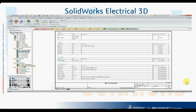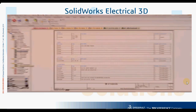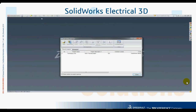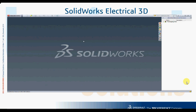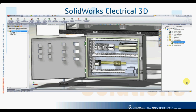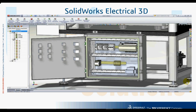SOLIDWORKS ELECTRICAL 3D lets you take your project one step further and give another dimension to your work. Designed for collaboration and fully embedded inside SOLIDWORKS, it gives users access to all the information they need to rapidly integrate electrical systems inside their design. Thanks to full bi-directional and real-time consistency checking between the 2D schematic and the 3D data, you are always aware of the status of your project.